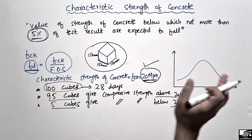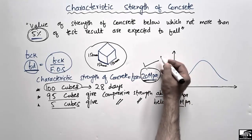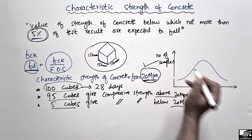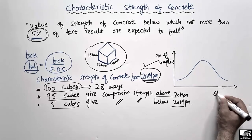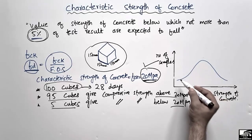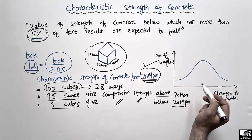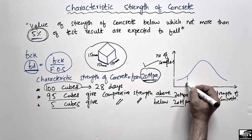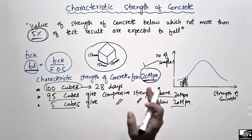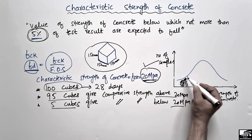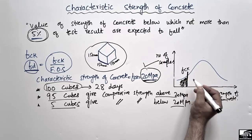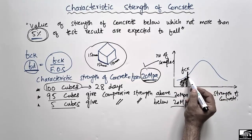Now let's understand this with the help of a graph. On the y-axis I represent the frequency or the number of concrete samples, and on the x-axis I represent the strength of the concrete. This is the probabilistic distribution curve for the characteristic strength of concrete, where only five percent of the strength values fall in the lower category. The line representing FCK is the characteristic strength of the concrete.